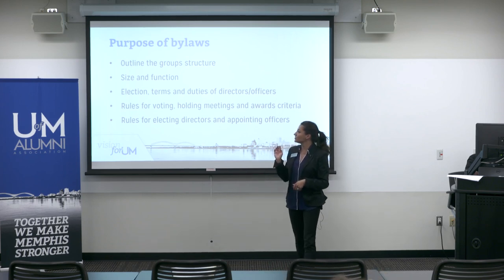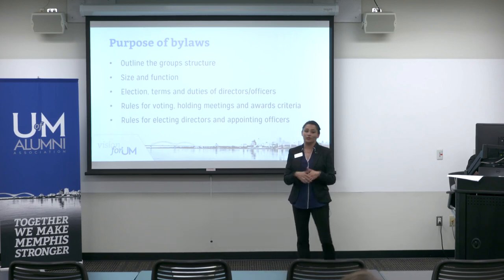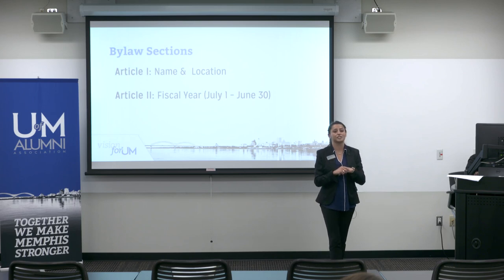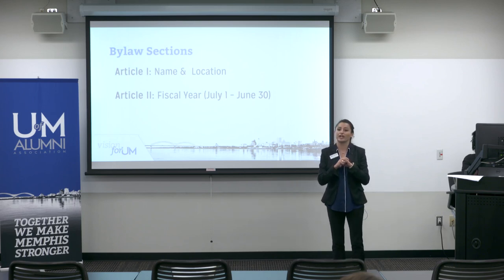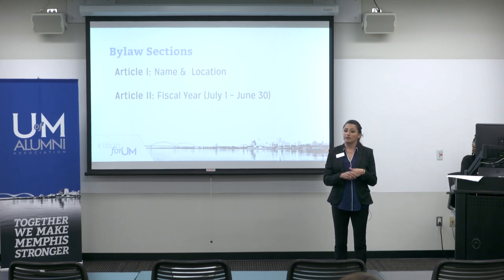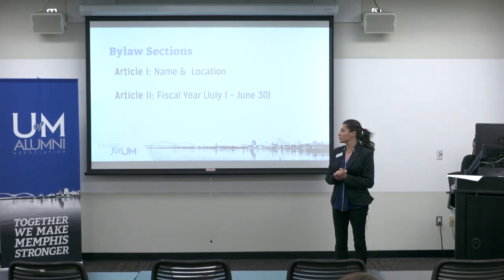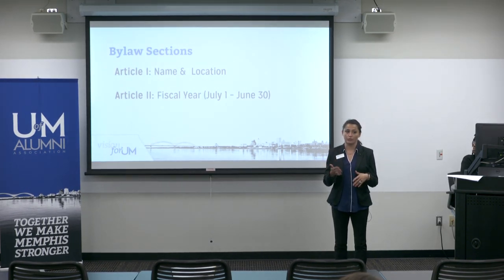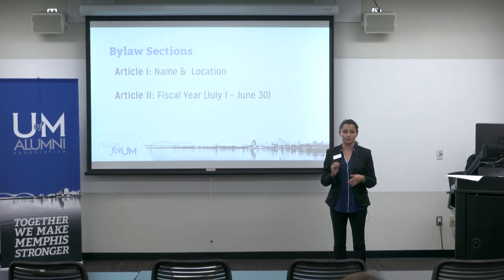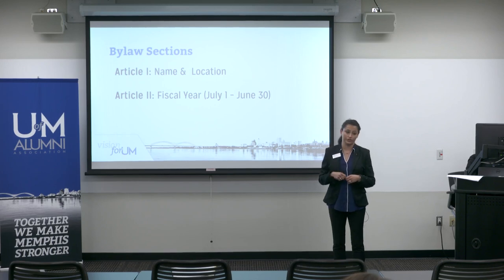We're going to go through the main outline of what your bylaws would look like. If you are creating bylaws for your group, it would first start with your name, your chapter, and where you're located. Then the fiscal year of the university and of the alumni association, which is July 1st through June 30th.